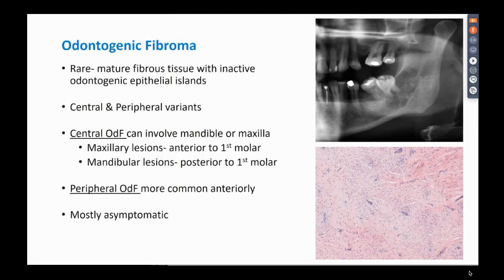Odontogenic fibroma has two variants: a central variant originating predominantly in bone, and a peripheral variant present almost entirely within soft tissues. Central intra-bony odontogenic fibromas in the maxilla tend to be anterior to the first molar, whereas in the mandible they tend to be more commonly posterior to the first molar. Peripheral odontogenic fibromas in soft tissue tend to be more common anteriorly. Almost always these are asymptomatic.